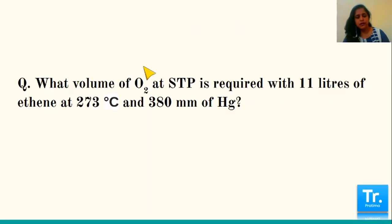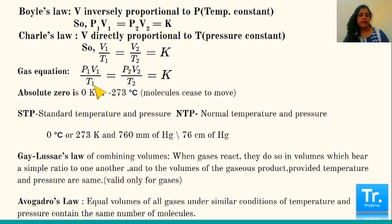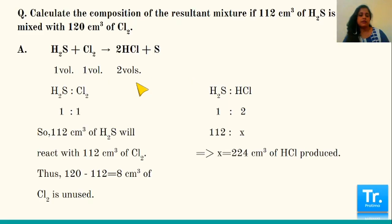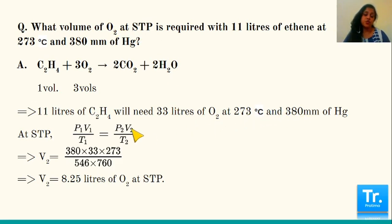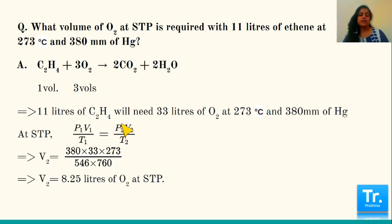Using the gas equation P1V1/T1 = P2V2/T2: V1 = 33 L, T1 = 546 K, P1 = 380 mm Hg; find V2 at STP where T2 = 273 K and P2 = 760 mm Hg. Substituting: V2 = (380 × 33 × 273) / (546 × 760) = 8.25 liters of oxygen at STP.